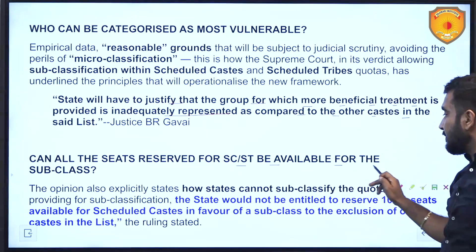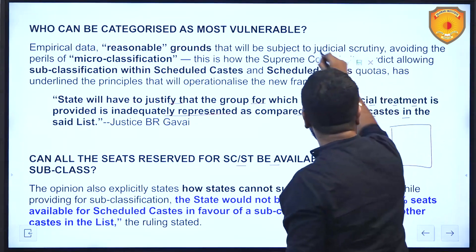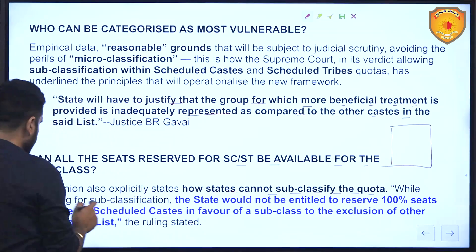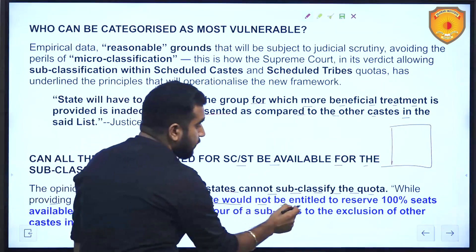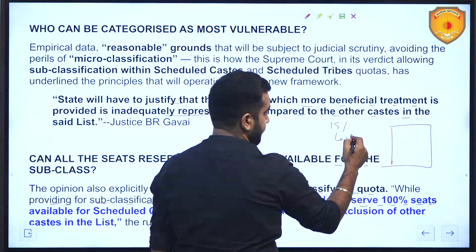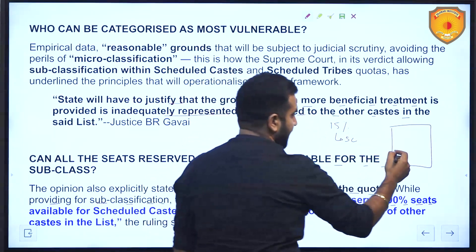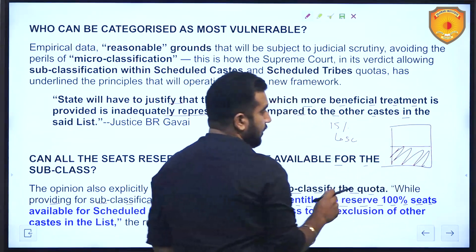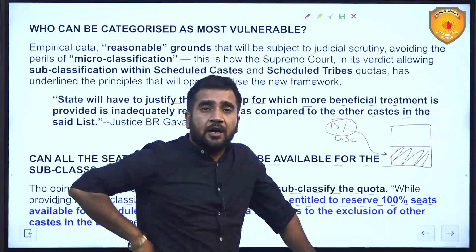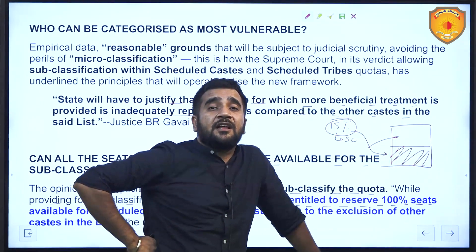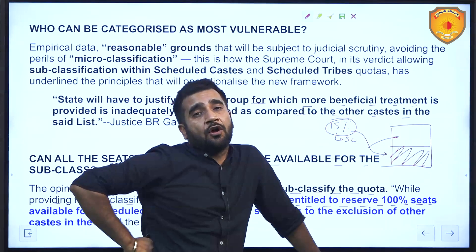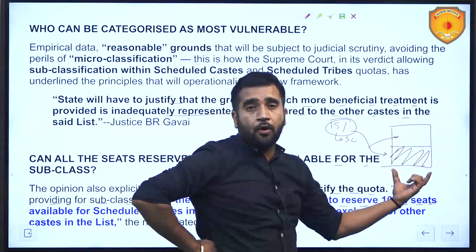Can all seats reserved for SC/ST be given to the sub-class? The answer is no. States cannot sub-classify the quota in a way that provides 100% of seats to the lower rung. For example, if a job has 15% reserved for SC, the judgment clearly states that not all 15% should go to the lower rung — some must go to the upper rung within SC as well. Reservation is not ending for the upper category within SC or ST; they will still get reservation, just with fewer benefits compared to the more deprived sub-group.